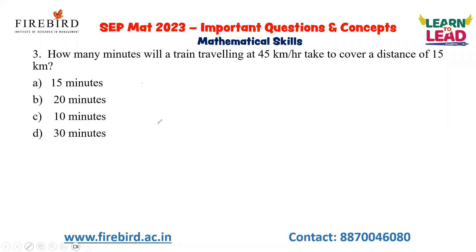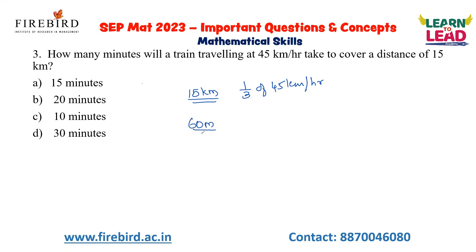Next question: How many minutes will a train travelling at 45 km per hour take to cover a distance of 15 km? I need to cover 15 km, which is one-third of 45 km. The speed is 45 km per hour, meaning the train can travel 45 km in one hour (60 minutes). To cover 15 km, just divide 60 minutes by 3, giving 20 minutes. So the train can travel 15 km in 20 minutes.